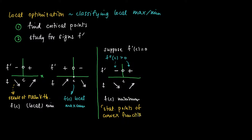In particular, this applies to stationary points of convex functions. Strictly convex functions always have positive second derivatives, so we don't need to look further — we already know that a stationary point is a minimum location.